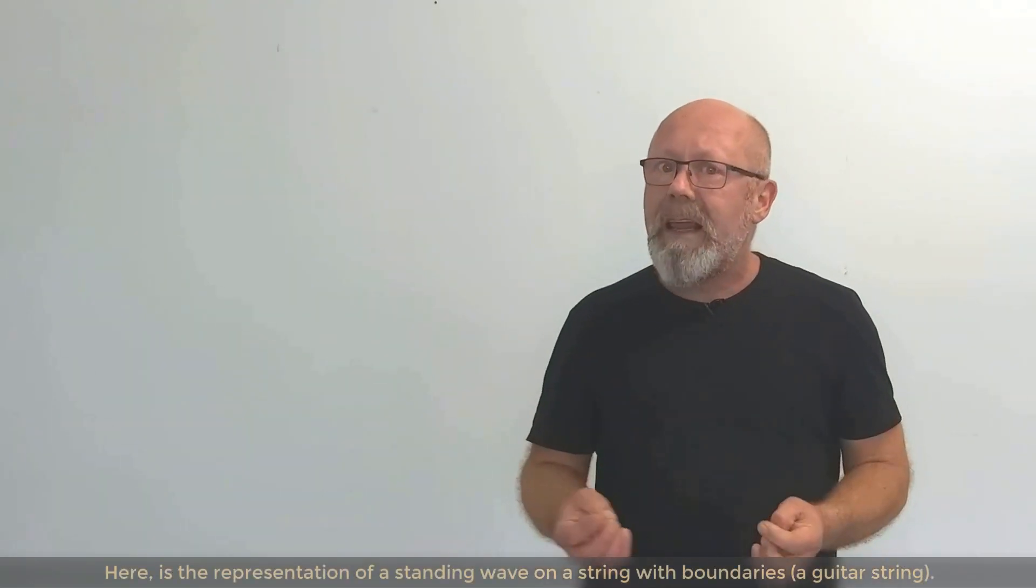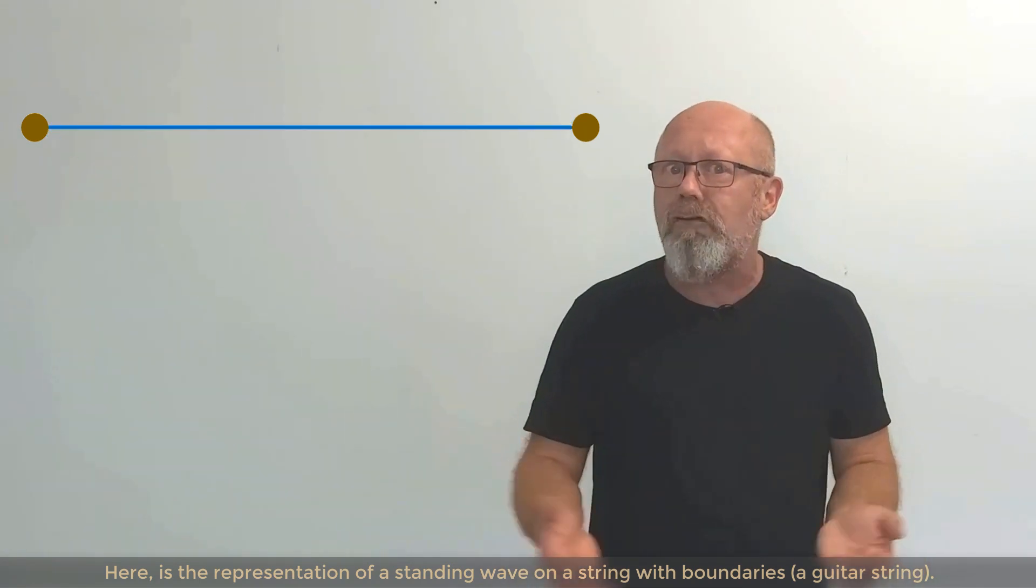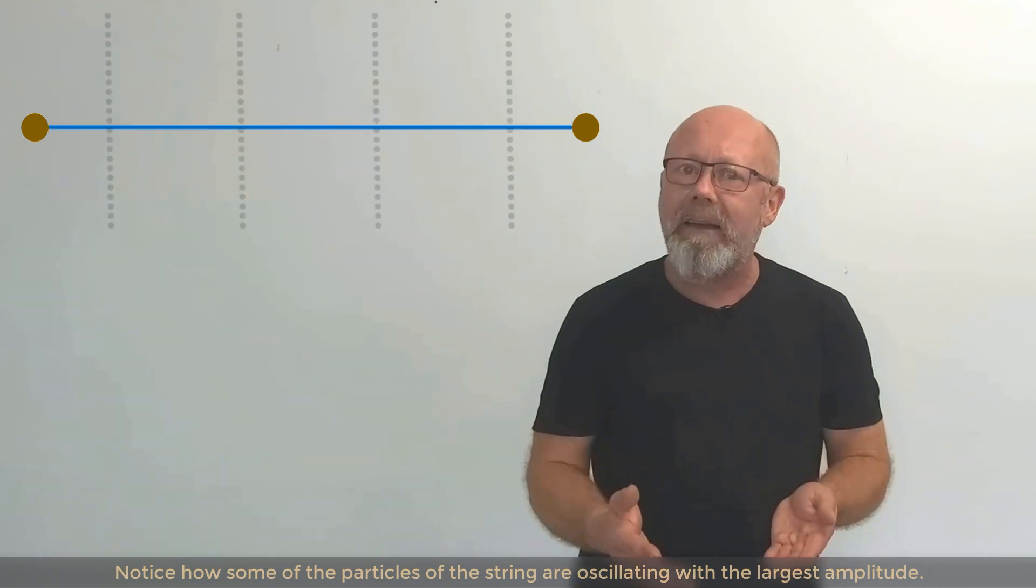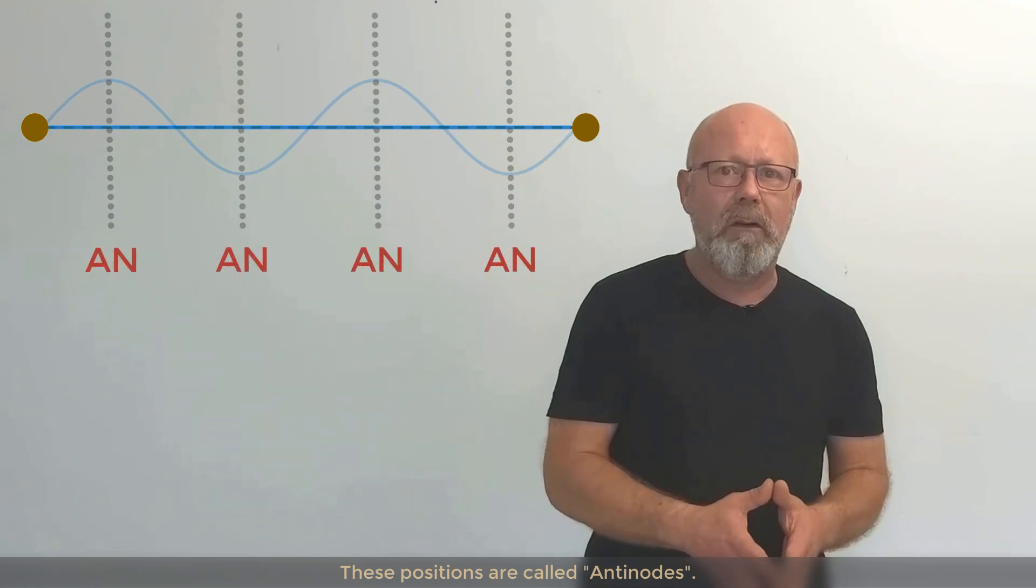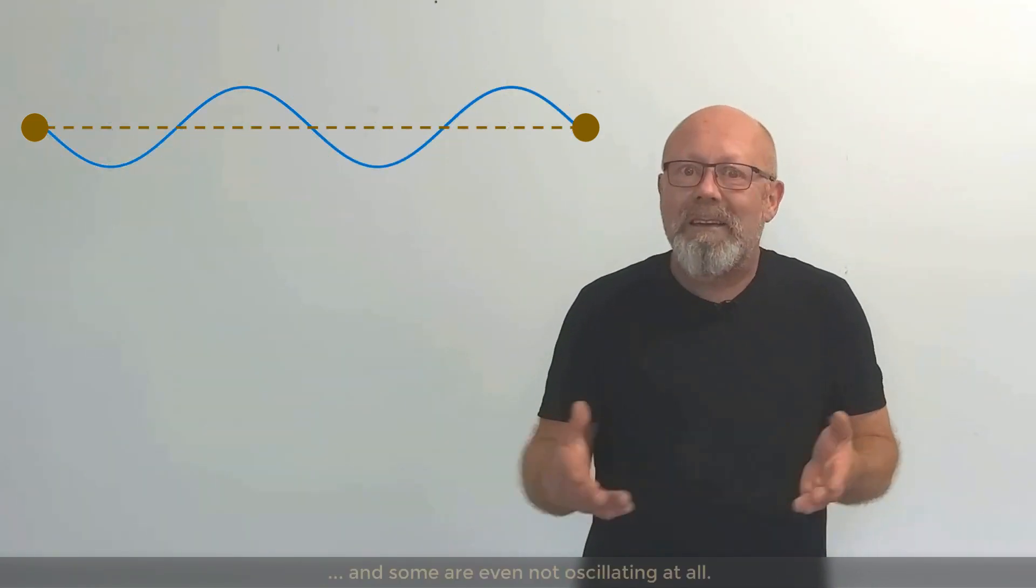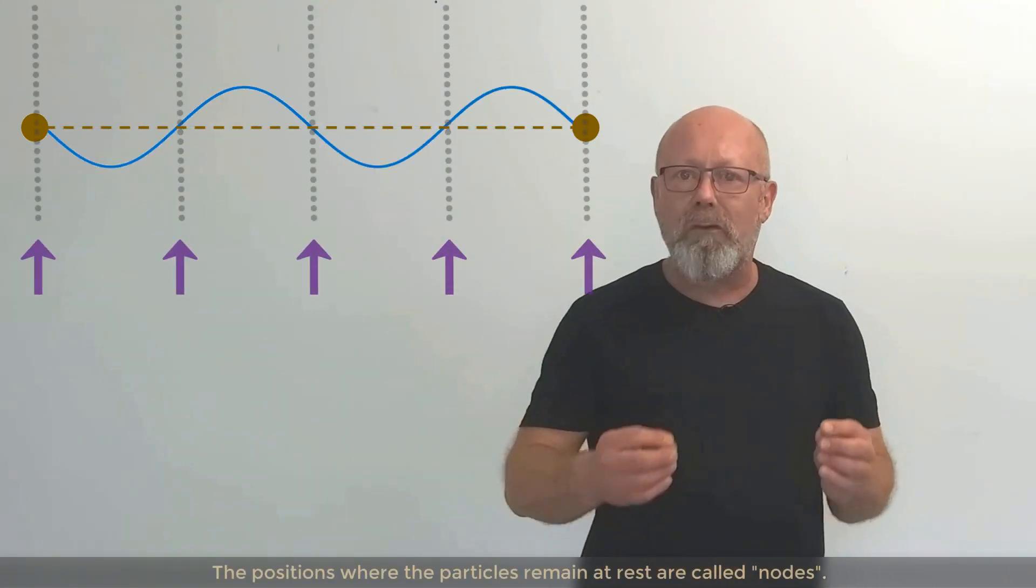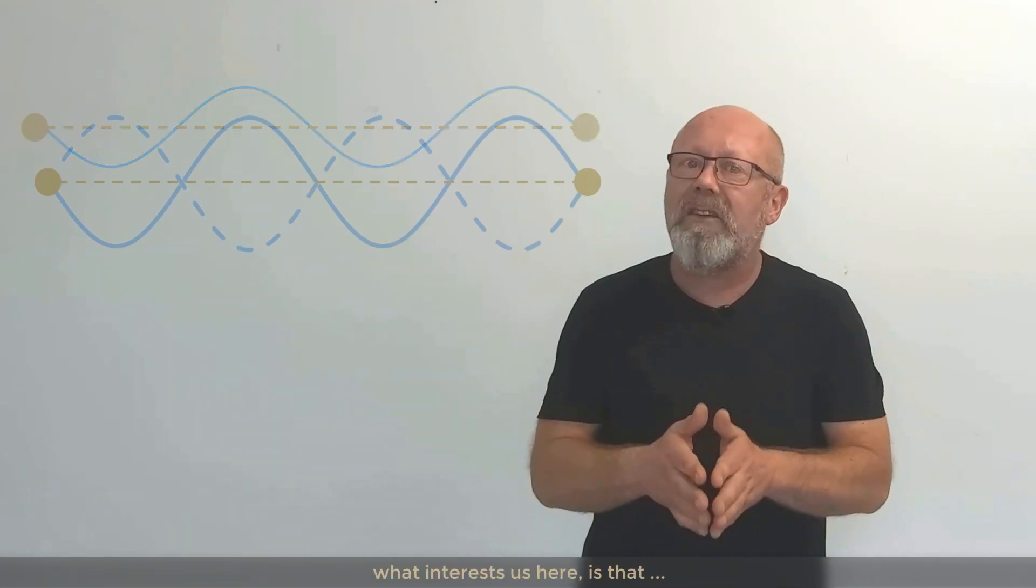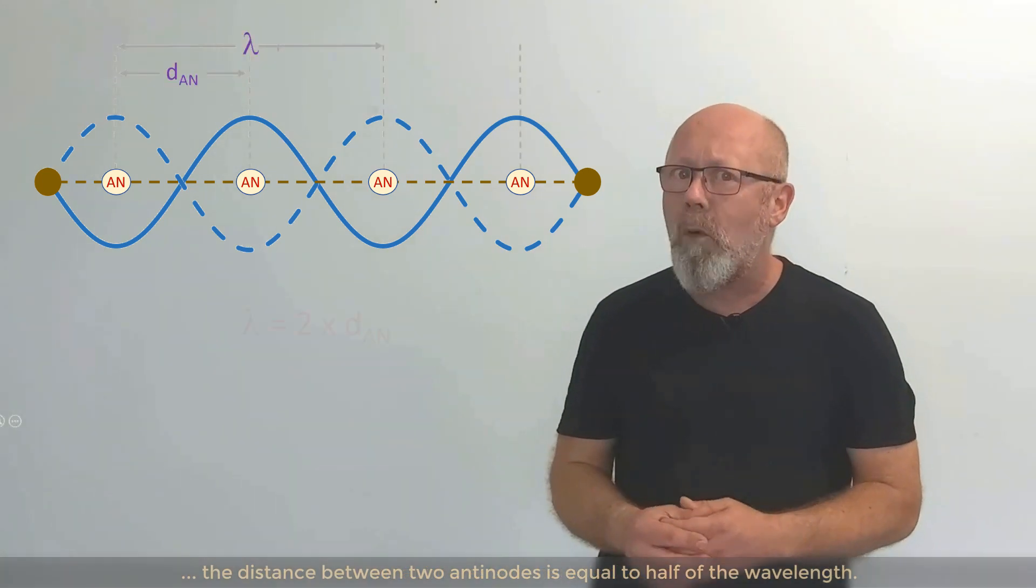Here is a representation of a standing wave on a string with boundaries, like for example a guitar string. Notice how some of the particles of the string are oscillating with the largest amplitude. These positions are called antinodes. Some other particles oscillate with a smaller amplitude. And some are not even oscillating at all. The positions where the particles remain at rest are called nodes.